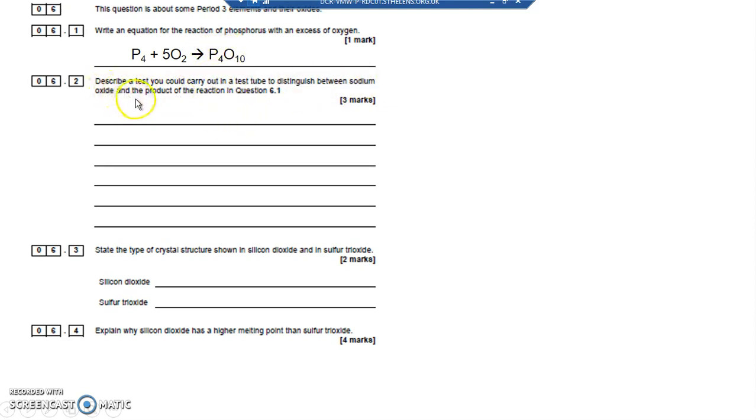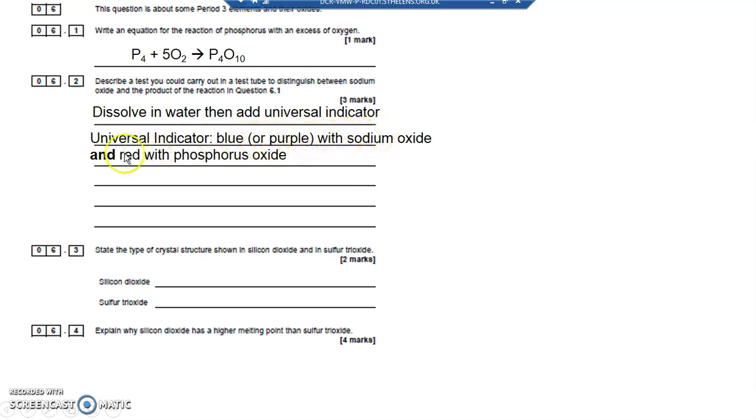Well, sodium is a metal, so metal oxides tend to be basic alkalis. P4O10 - phosphorus is towards the right of the periodic table in group 5, so that's a non-metal oxide. They tend to be acidic. So you dissolve in water, add a universal indicator. Sodium oxide is going to go blue or purple, and phosphorus oxide is going to go red because it's acidic. Non-metal oxides, elements on the right hand side of the periodic table, their oxides are acidic and will turn universal indicator red. Metals on the left hand side in group 1 and group 2 will form alkaline or basic oxides and turn universal indicator blue or purple.